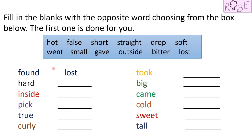Now let us come to the second word: hard. This table is very hard. What will be the opposite of hard? It will be soft. Soft.